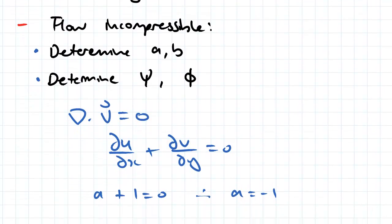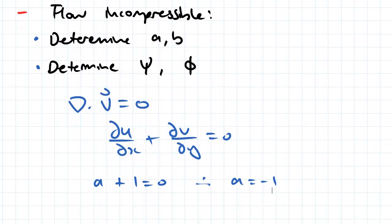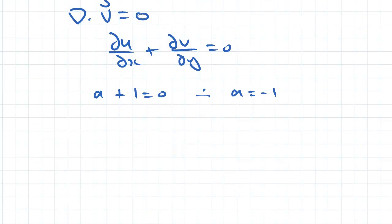The next thing we want to do is because we know we're dealing with irrotational flow. We know that the cross product between our gradient vector and our velocity vector is equal to zero.